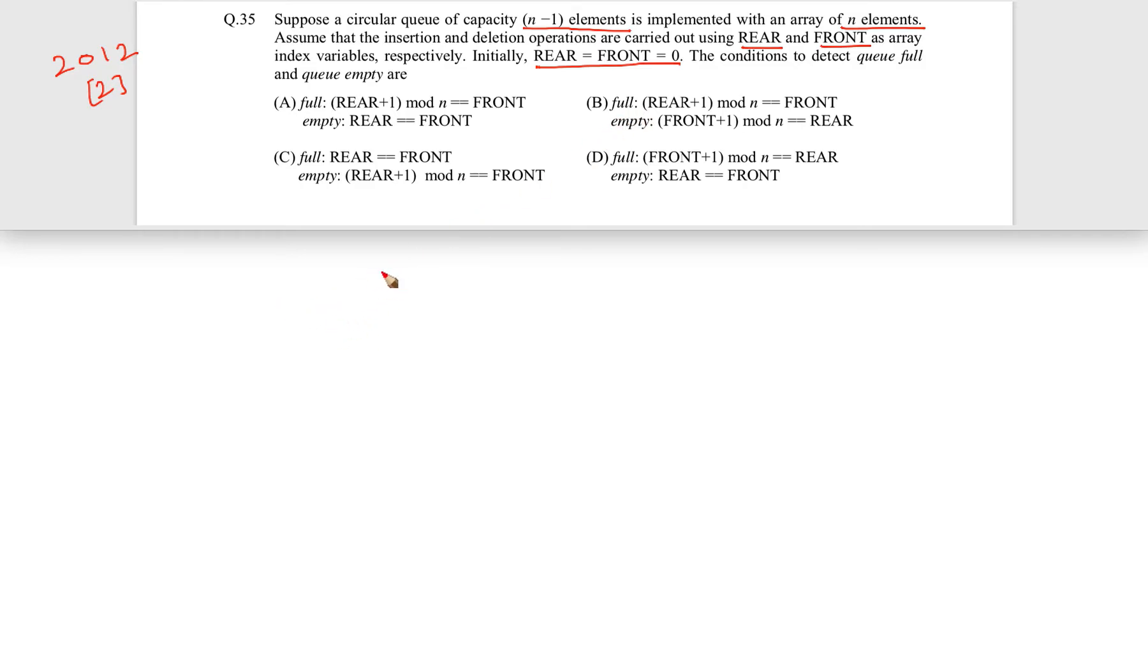They are saying that let us say there is an array and let us say n is equal to 5. So, 5 is only the value of n. So, these are n elements. Its capacity will be n minus 1 which is 4. Only 4 elements we can insert in this.